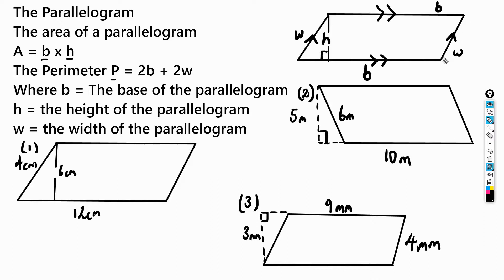The width on one side is equal to the width on the other, and the bases are equal to each other because they're parallel — as you can see, the arrows indicate that. So: b is the base, h is the height, and w is the width of the parallelogram.